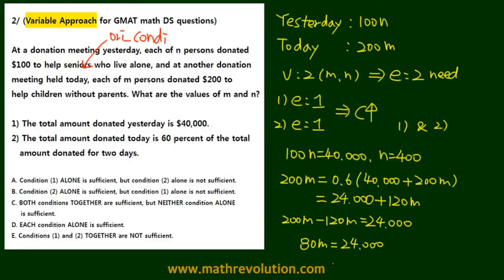So that's 80m equal to 24,000, and m is equal to 300. Since n and m are both solved, that's sufficient, and C is going to be our answer. Remember, this is the variable approach method, and it's the most recognized way of solving a GMAT math problem.